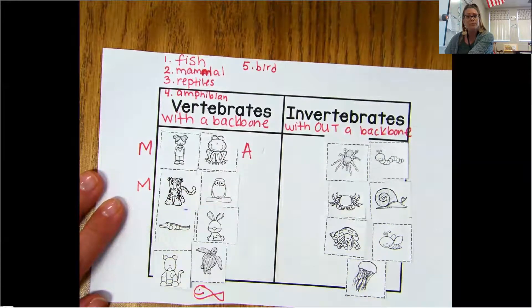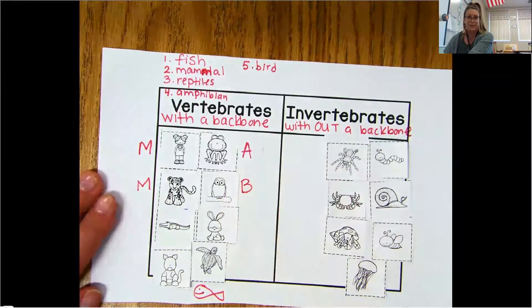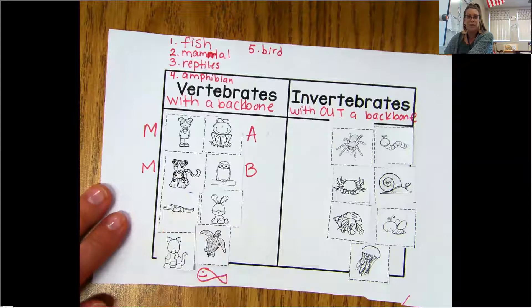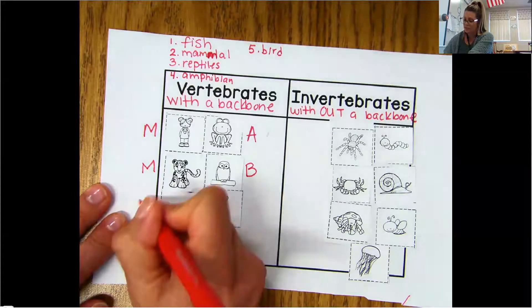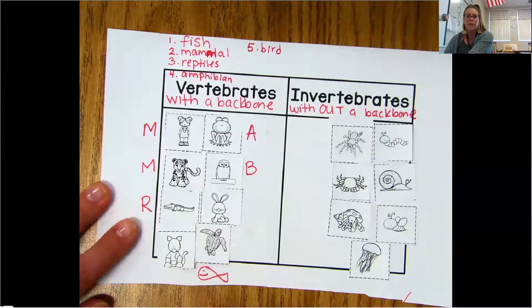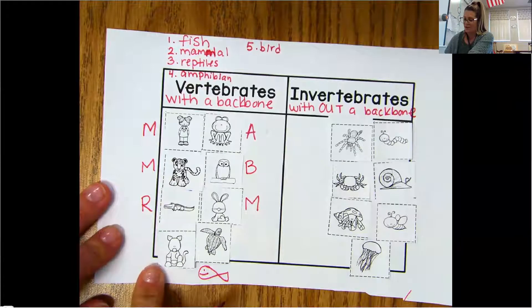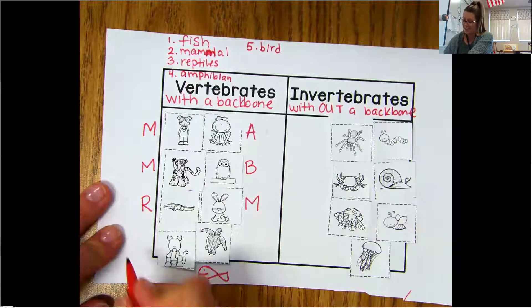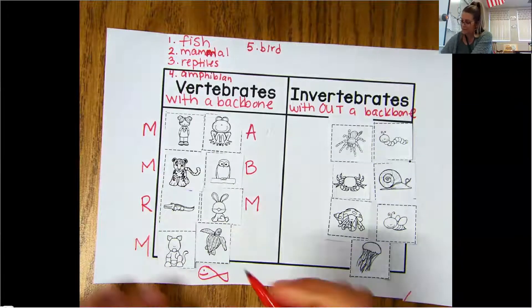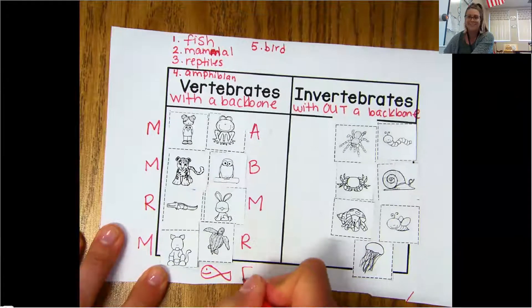What about the owl? The owl is a what? Go ahead and write the first letter. It's a bird. What about our alligator or our crocodile? How would that be considered? Go ahead and put the first letter. You should be putting R for reptile. And then the cute little bunny. You should know it's a what? A mammal. And then we've got a kangaroo, which is also a mammal. And then what about the turtle? What's the turtle? The turtle would be a reptile. And then our fish, of course, a fish.